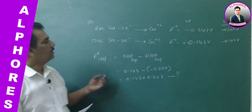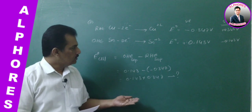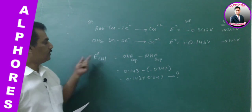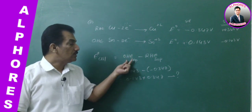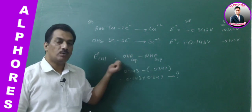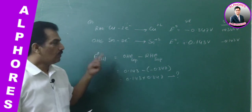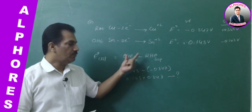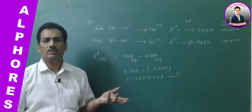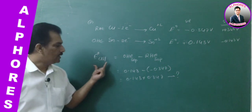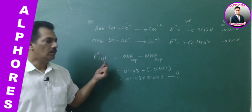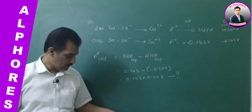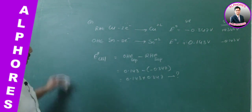Just remember: in the previous problem, they provided SRP values, so we used E0 cell = RHE SRP minus OHE SRP. But here they provided SOP values. From SOP values, we already know three different formulae to get E0 cell. From SOP, you have to get the answer like this. That is the second numerical.